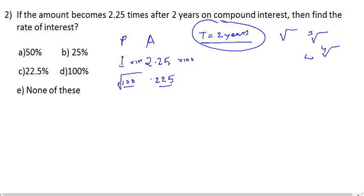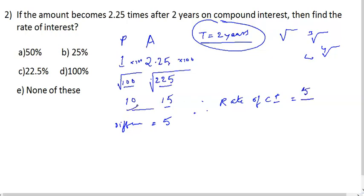The square root of 225 is 15, and square root of 100 is 10. The difference is 15 minus 10 equals 5. Therefore, the rate of compound interest is 5 upon 10 times 100, which equals 50 percent. I hope you understand, so 50 percent is the answer.